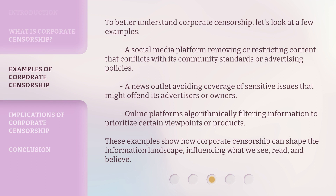To better understand corporate censorship, let's look at a few examples. A social media platform removing or restricting content that conflicts with its community standards or advertising policies. A news outlet avoiding coverage of sensitive issues that might offend its advertisers or owners. Online platforms algorithmically filtering information to prioritize certain viewpoints or products. These examples show how corporate censorship can shape the information landscape, influencing what we see, read, and believe.